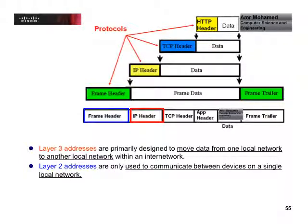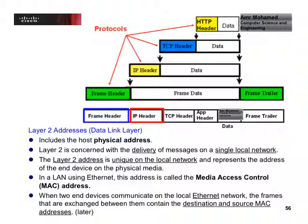Layer two addresses are what we commonly refer to as physical addresses. These physical addresses are used to communicate between devices, one device to another. The layer two or data link layer address includes the physical address, and this address is actually hard-coded — burned into the hardware. So this address is a permanent address per device. If you have multiple cards on your machine, each card will have a different physical address.